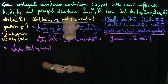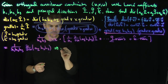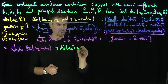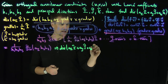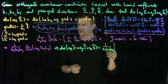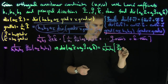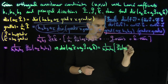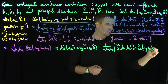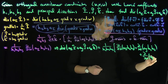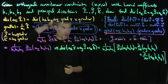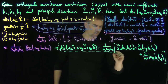By the exact same reasoning applied symmetrically, the divergence of a_i î + a_j ĵ + a_k k̂ is (1/h1 h2 h3) times [∂/∂u(a_i h2 h3) + ∂/∂v(a_j h1 h3) + ∂/∂w(a_k h1 h2)]. That is our formula for the divergence in orthogonal curvilinear coordinates.